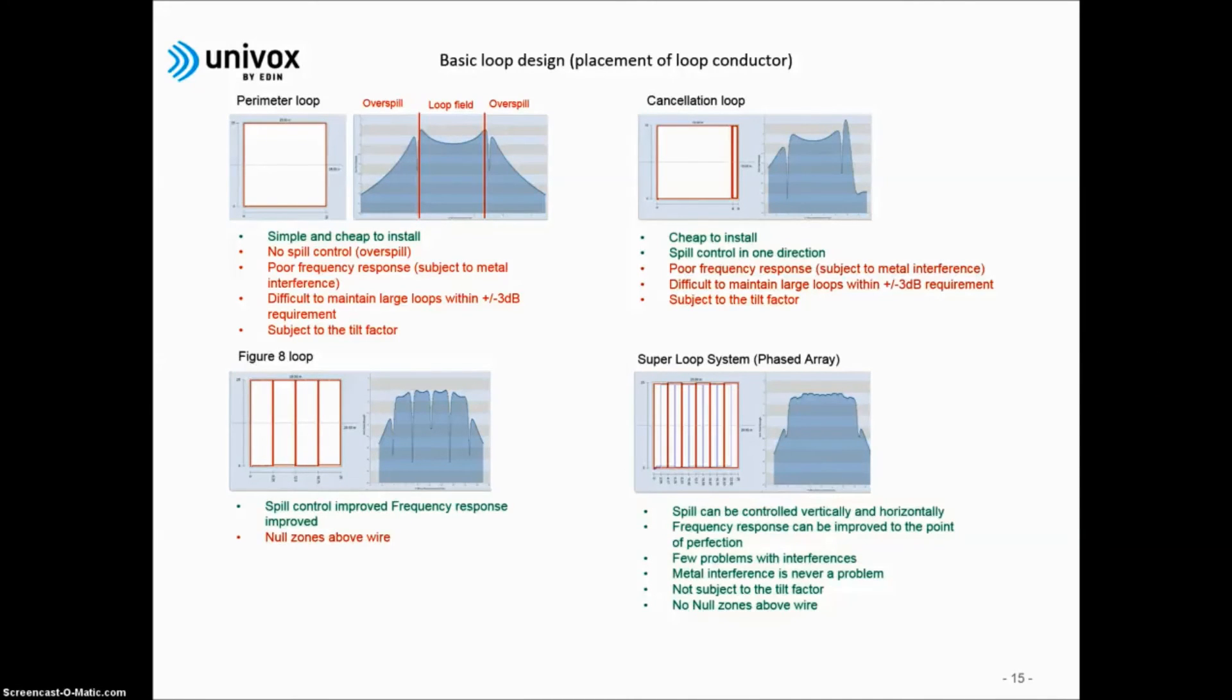On the bottom left is a design called the figure 8. It is a multi-segment loop used to combat metal loss effects. By dividing the area in segments, the listener will always be closer to the wires than in a perimeter loop of equal size, and less likely to suffer the effects from metal loss. A figure 8 design can have any number of segments. A downside with a figure 8 are the null zones above the wires. Above the wire, the magnetic field will produce horizontal energy instead of vertical, which cannot pass through the T-coil in the hearing aid. This will cause a silent spot, a null zone.